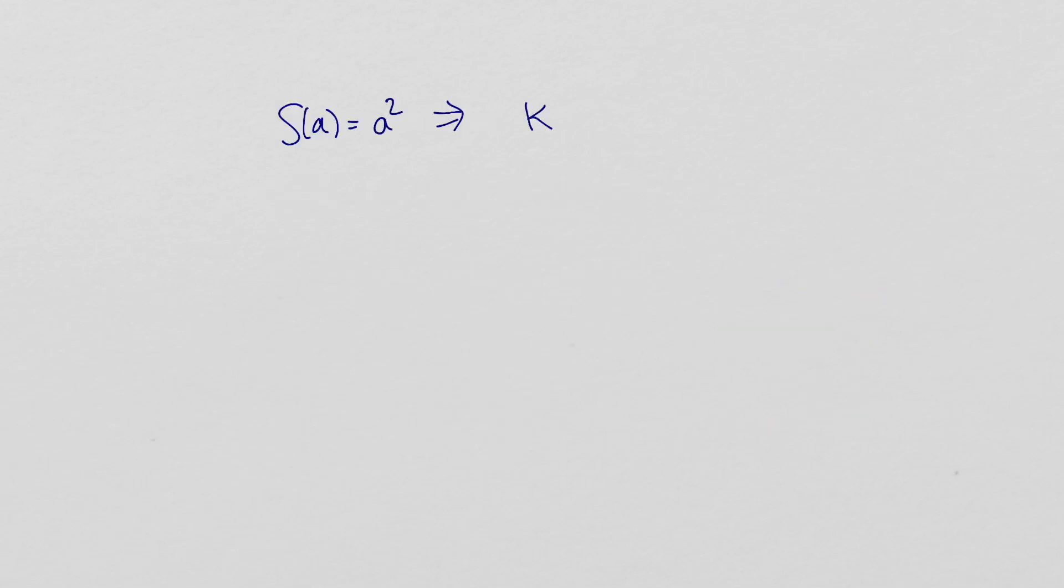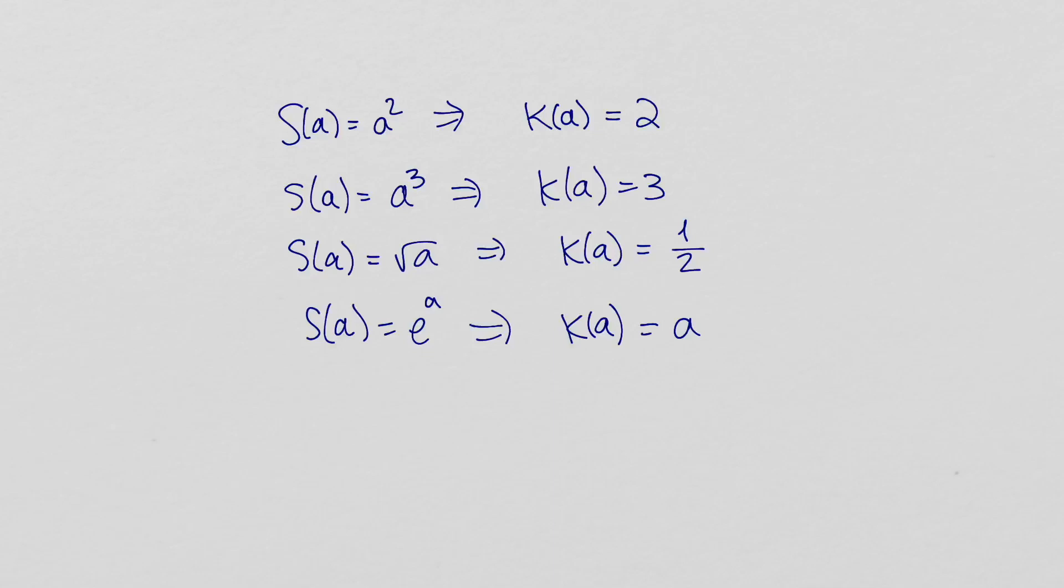Lots of functions have constant condition numbers. The exponential function has condition number a. It magnifies relative error more as the input increases.